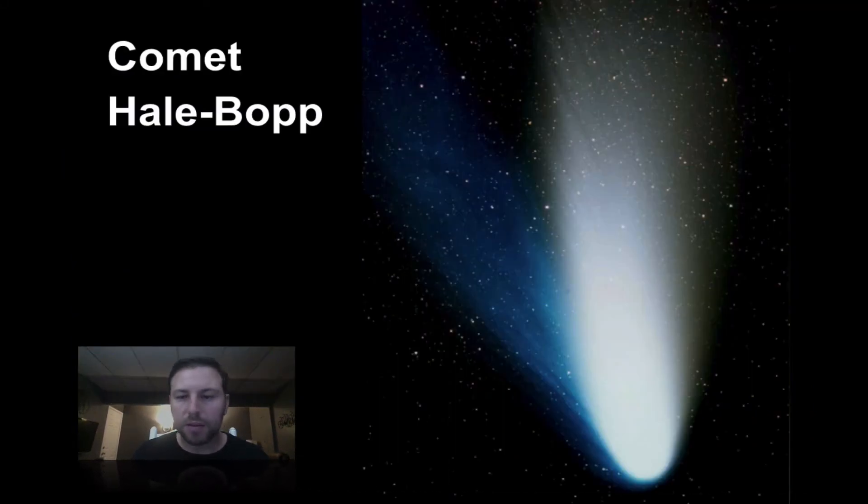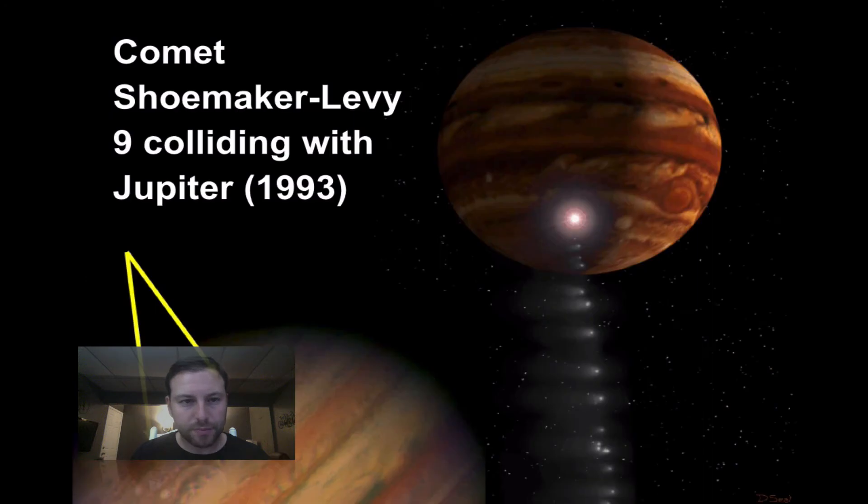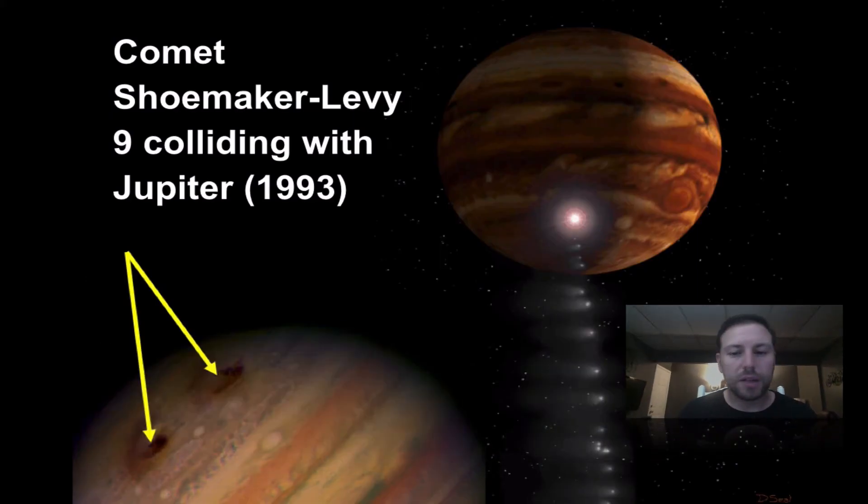Here's Hale Bopp Comet. Halley's Comet. This is Shoemaker Levy. This is when it was starting to break up as it's going in towards Jupiter.